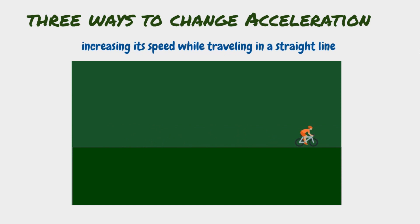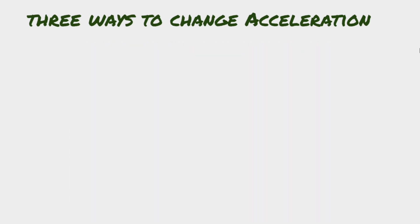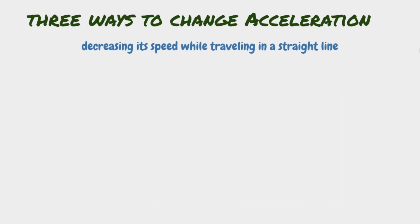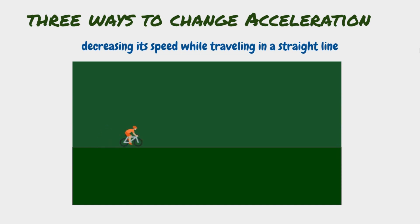Second, by decreasing its speed while traveling in a straight line. For example, this bike accelerates because it suddenly slows down while traveling. This acceleration is called deceleration.